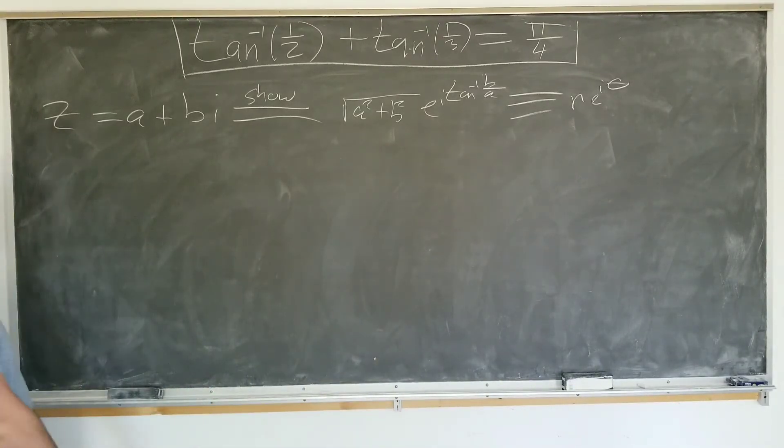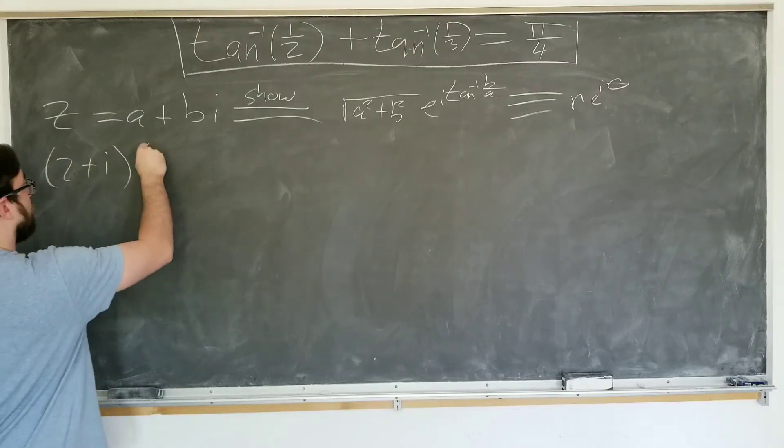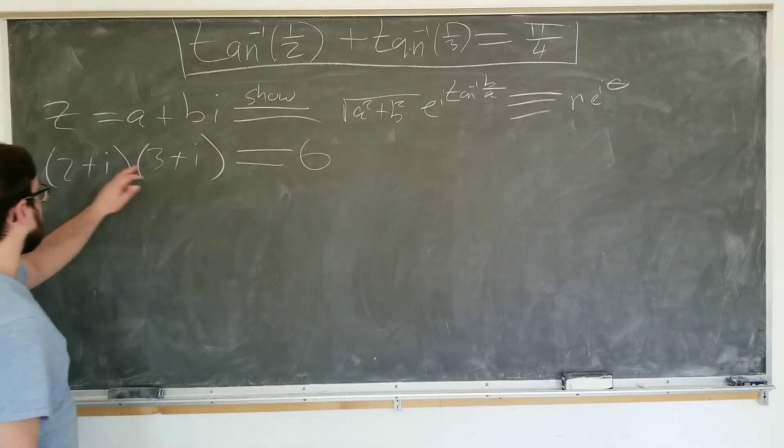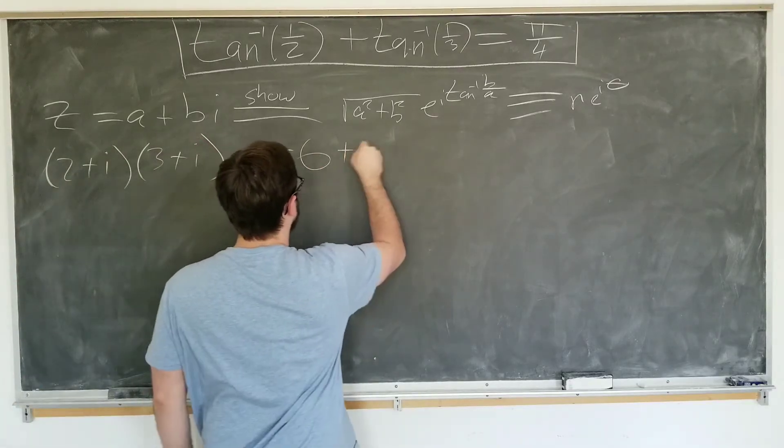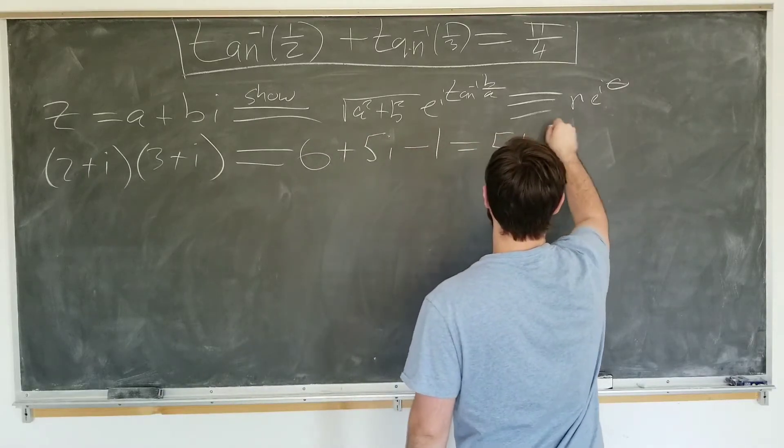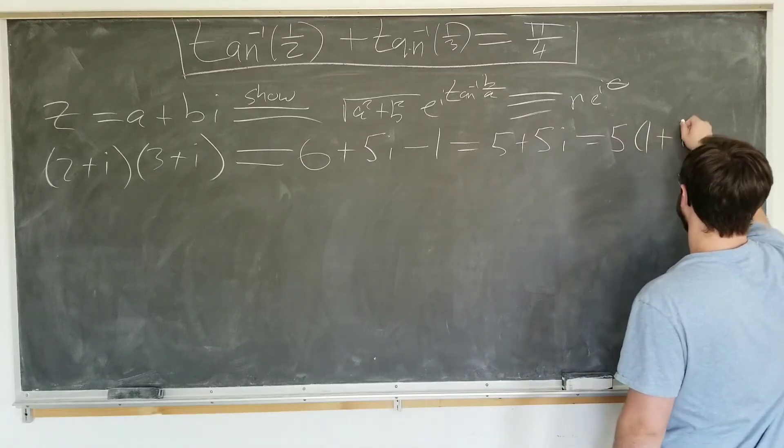Okay, so we're going to start by considering 2 plus i times 3 plus i. Going to foil this out: 6 plus 5i minus 1 is 5 plus 5i, which is 5 times 1 plus i as well.